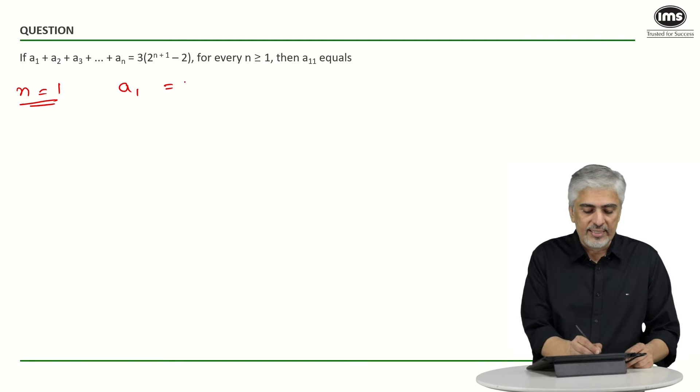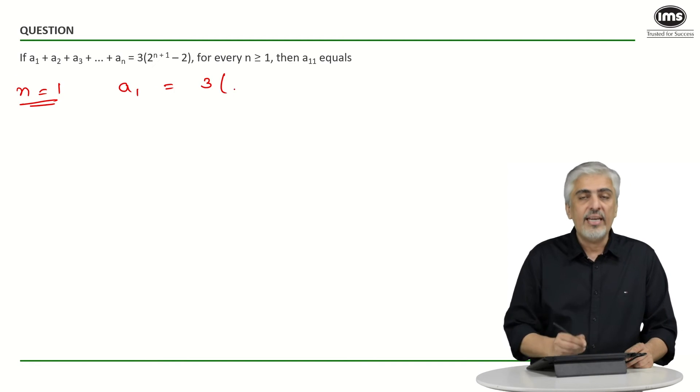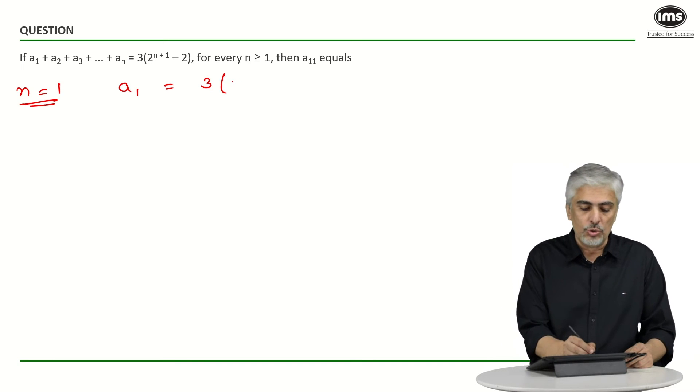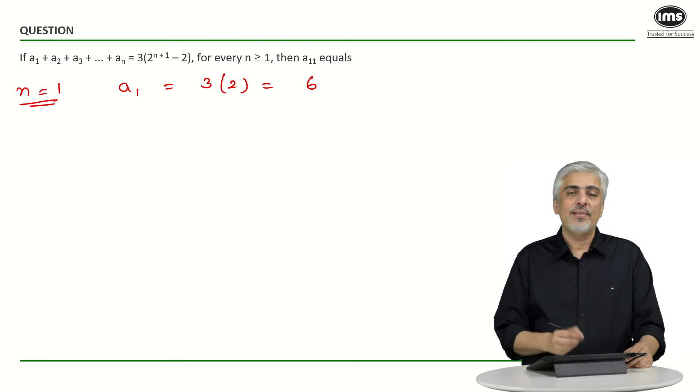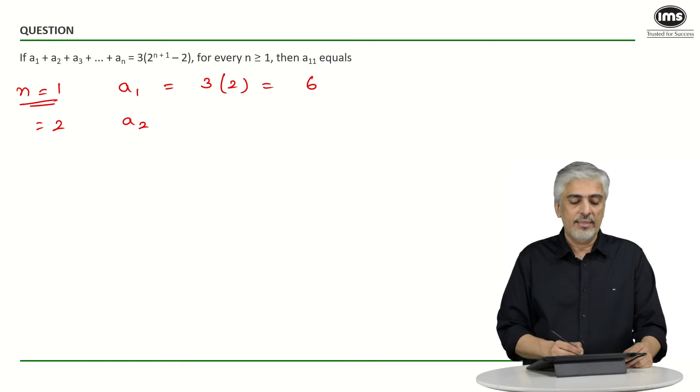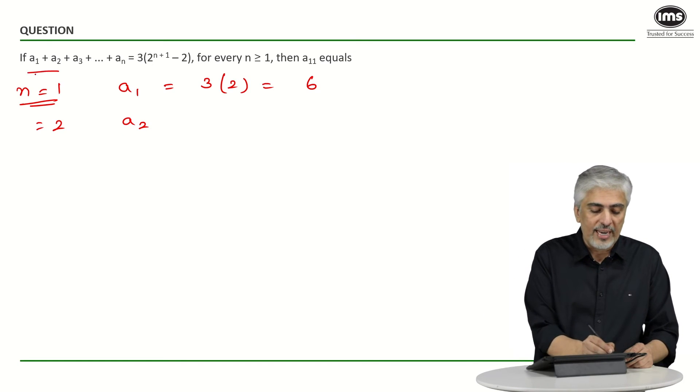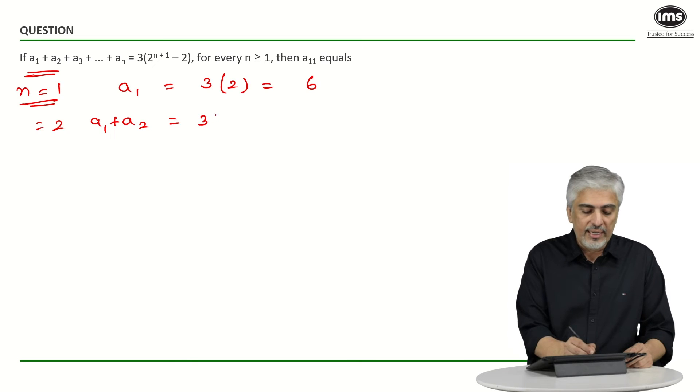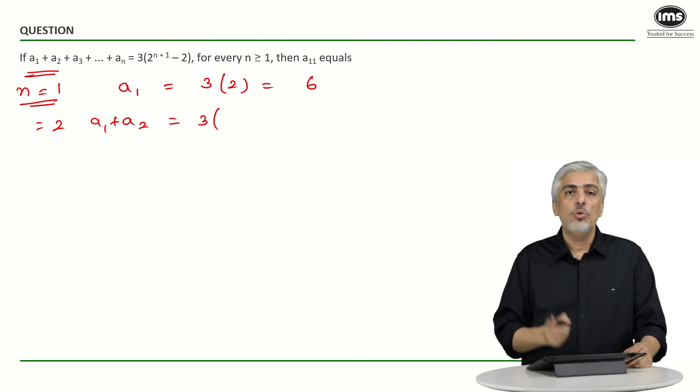If I put n as 1, what do I get? I get a₁ is equal to 3 into 2 raise to 2 minus 2. 2 raise to 2 is 4, 4 minus 2 is 2. So a₁ is 6 and I will try to find a pattern. Put n as 2 and I will get a₁ plus a₂, right? Putting n as 2, I should get a₁ plus a₂.